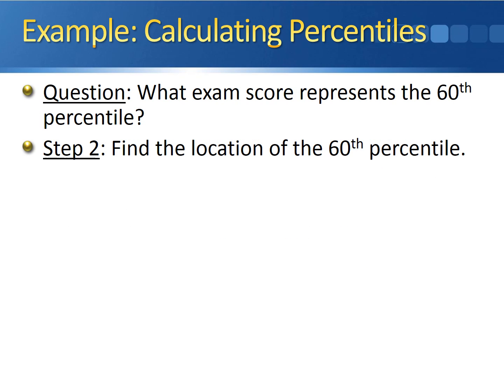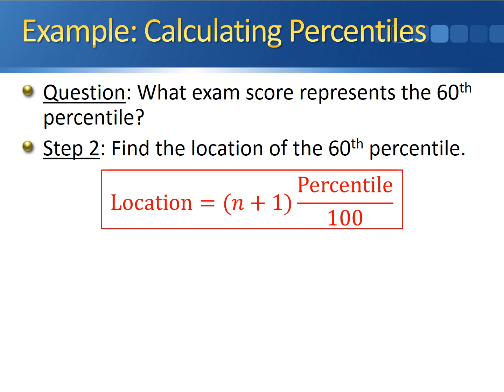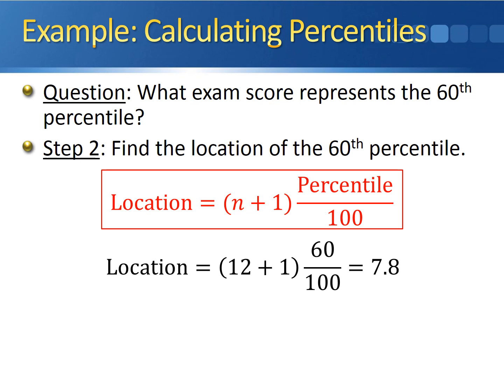Step two in calculating percentiles is finding the location of the 60th percentile. We need to figure out how many observations into the data we need to count to find that 60th percentile. The way we do this is by taking the number of observations, denoted by n, adding 1, multiplying by the percentile we're looking for, and dividing by 100. In this case, we have 12 observations and we're looking for the 60th percentile, so our calculation is 12 plus 1 times 60 divided by 100, which gives us 7.8. The fact that this is a decimal isn't going to be a problem — we have a way to handle that.